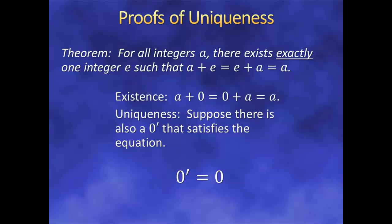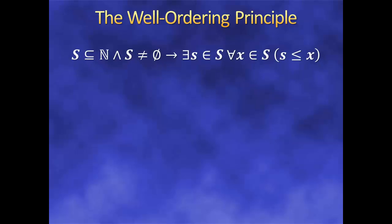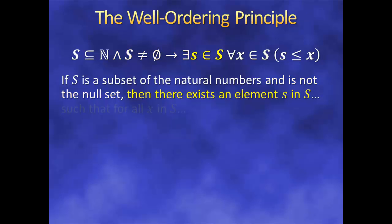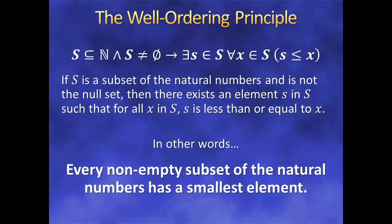There's one more kind of proof we're about to go over involving universal quantifiers. But before we talk about it, we'll need to take a detour into number theory to discuss a property of the natural numbers called the well-ordering principle. In symbolic form: the well-ordering principle states that if S is a subset of ℕ and is not the null set, then there exists some s ∈ S such that for all x in S, s ≤ x. So every non-empty subset of the natural numbers has a smallest element somewhere in the set.